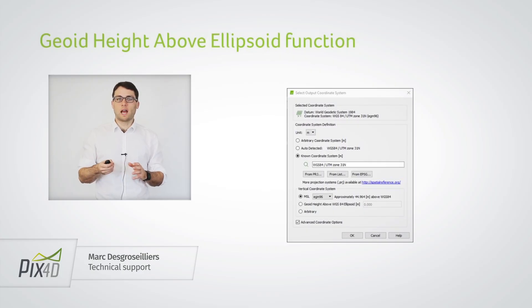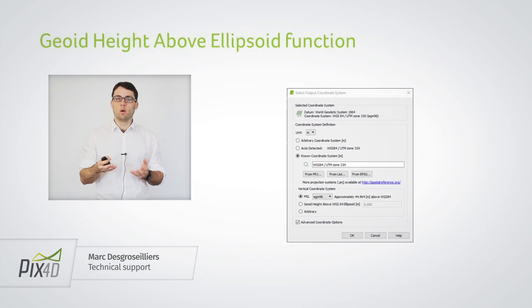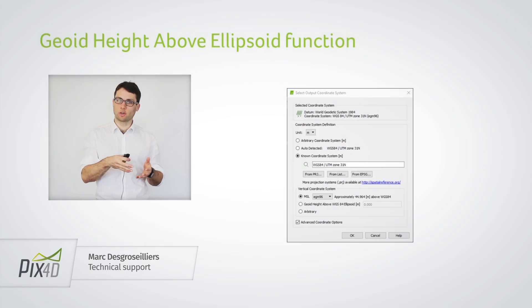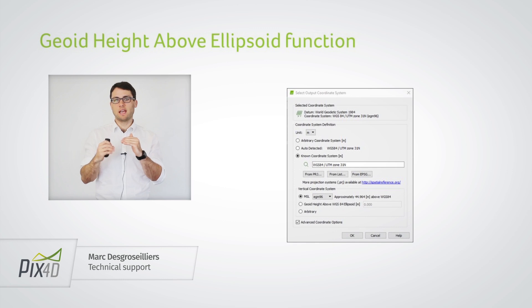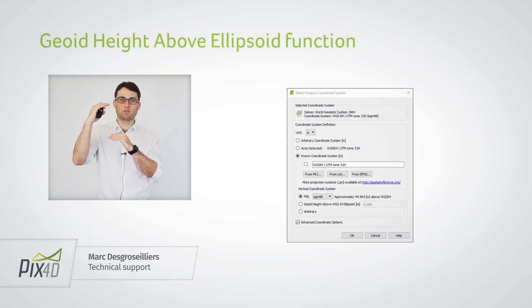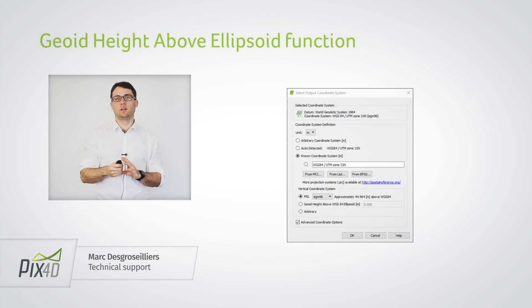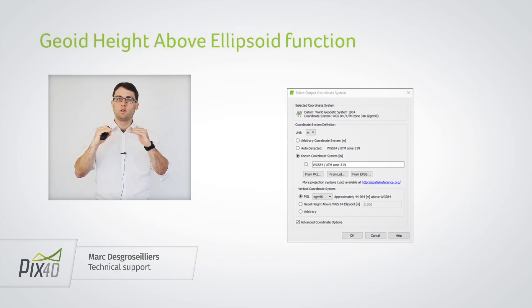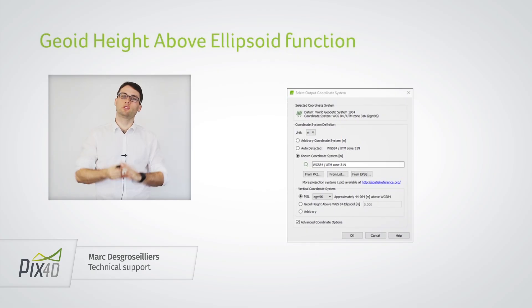If you have a different vertical coordinate system that you would like to use, this is also possible. What you should do is compute the difference at the location of your project between the ellipsoid and the vertical system you would like to use. So if there's a 20 meter offset between these two at your location, you should use the height of the geoid above ellipsoid function and enter 20 in this field. This will raise your project by 20 meters and use the vertical coordinate system that you would like to use.